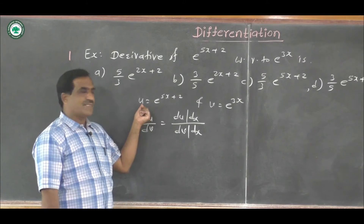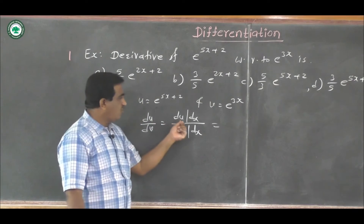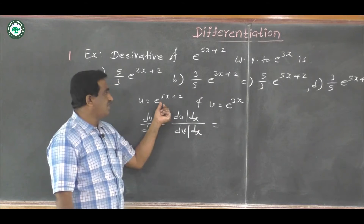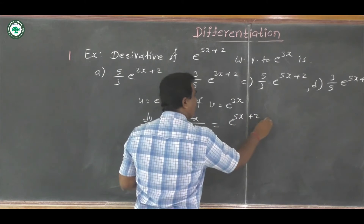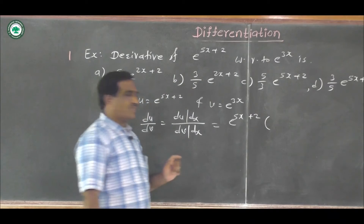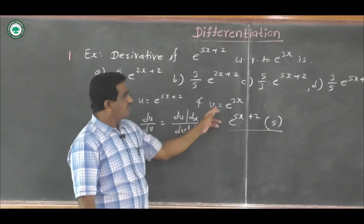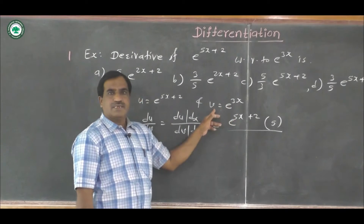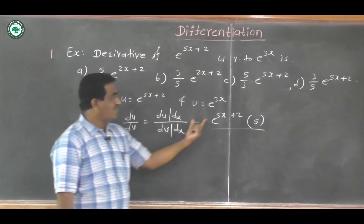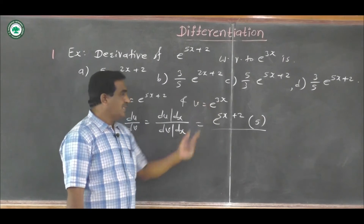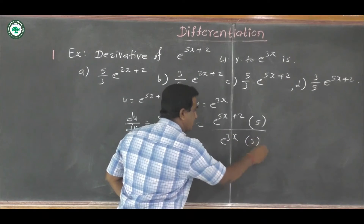Differentiating u with respect to x: du by dx equals derivative of e raised to (5x plus 2), which equals e raised to (5x plus 2) into derivative of (5x plus 2), that is 5. So du by dx equals 5 e raised to (5x plus 2). For v equal to e raised to 3x, dv by dx equals e raised to 3x into derivative of 3x, which is 3. So dv by dx equals 3 e raised to 3x.